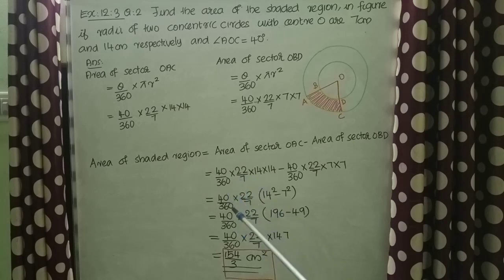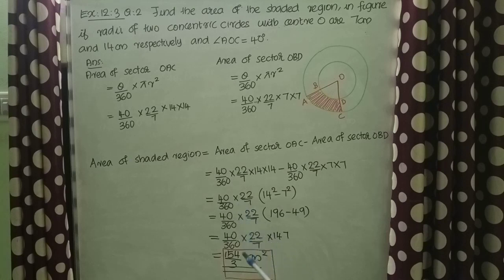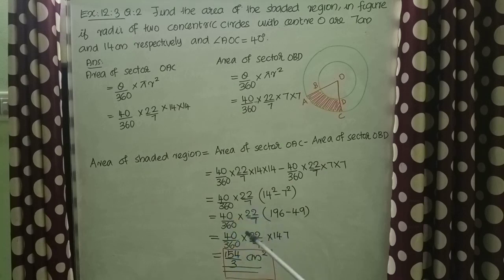So we get that is equal to 40 by 360 into 22 by 7 into (14 squared minus 7 squared). That is equal to 40 by 360 into 22 by 7 into (196 minus 49), that is equal to 40 by 360 into 22 by 7 into 147. By calculating and cancellation, we get the answer is 154 by 3 cm square.